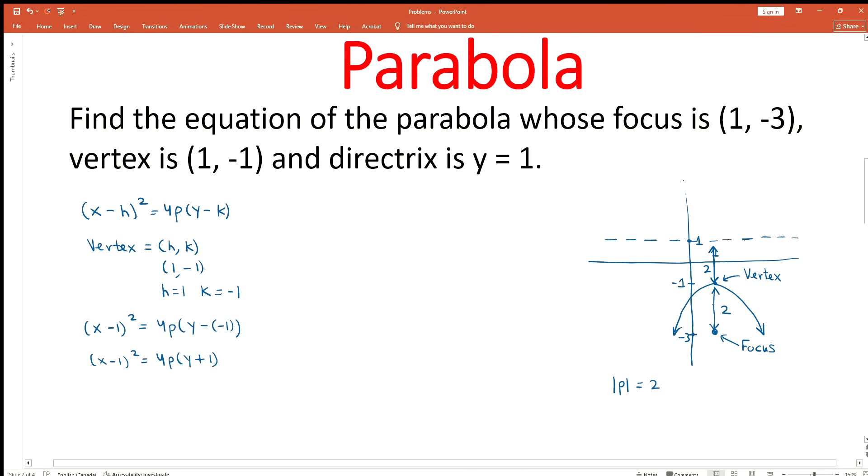Since the parabola opens in the downward direction, p should be a negative value. That means p equals -2.